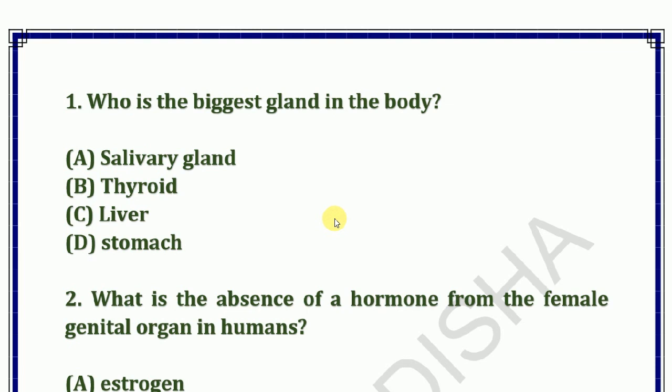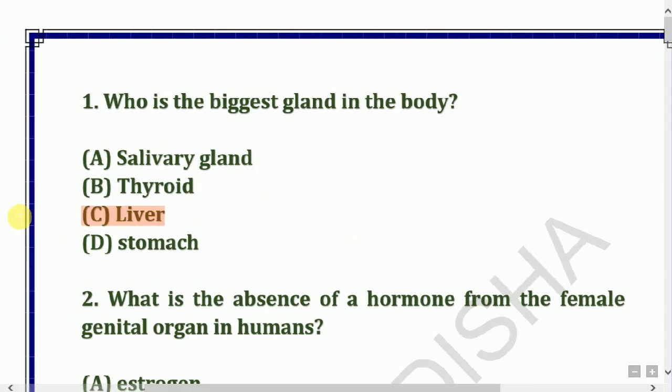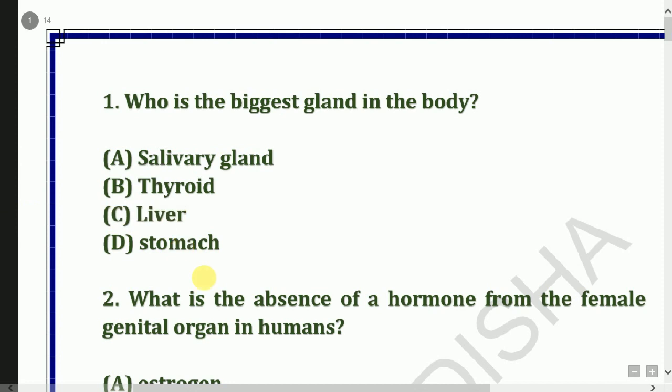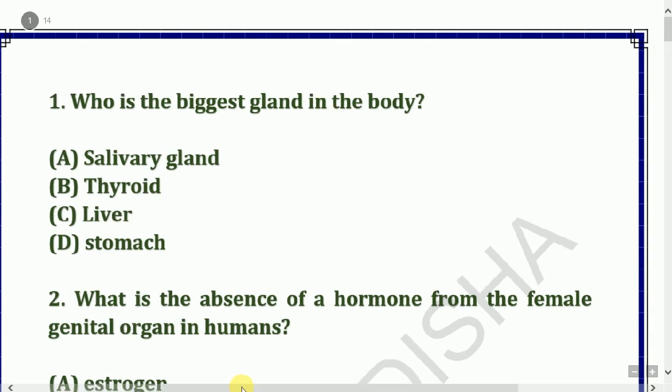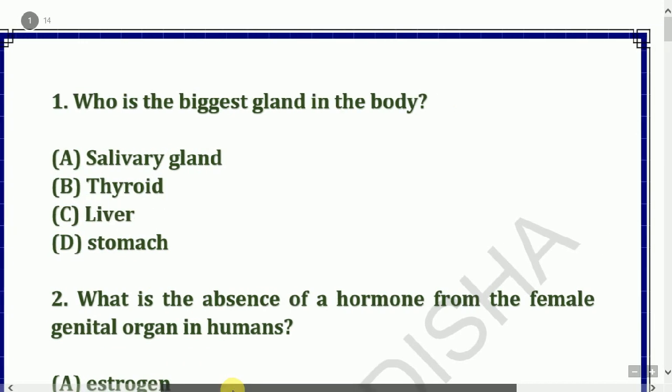Question: Who is the biggest gland in the body? Options: Salivary gland, thyroid, liver, or stomach. The answer is liver.